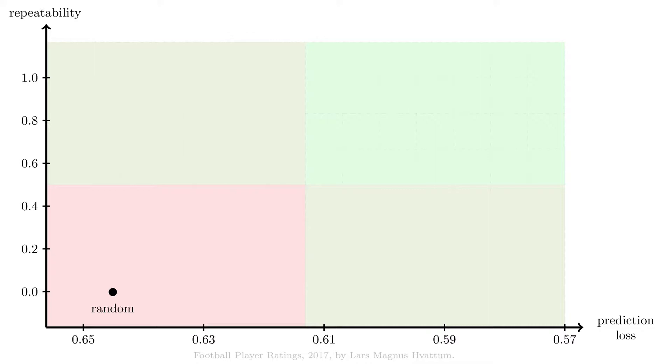Although random ratings do not carry any valuable information, our prediction model can still make use of historical data to know that, for example, a home win is more likely than an away win. Another benchmark is to assign to each player a unique rating that does not carry any information about the quality of the player. We can then obtain a perfect repeatability value of 1, but the prediction loss will not change.